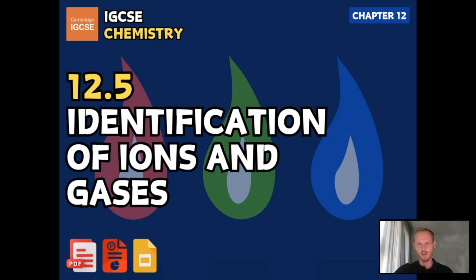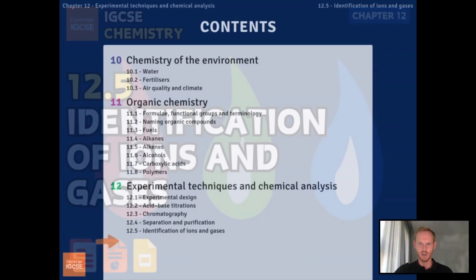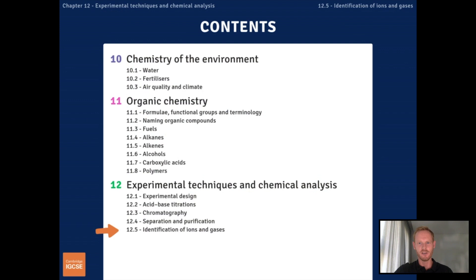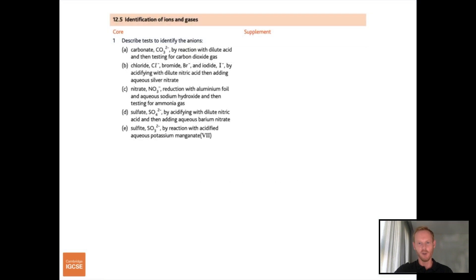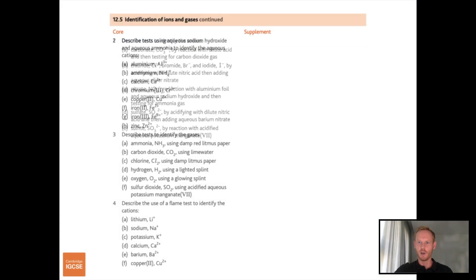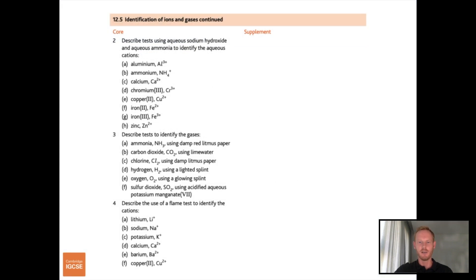Hello and welcome to another complete Cambridge IGCSE chemistry lesson, where you'll learn absolutely everything you need to know on topic 12.5, identification of ions and gases. We'll be following the Cambridge syllabus exactly, and we'll learn absolutely everything you need to know for your final exam.